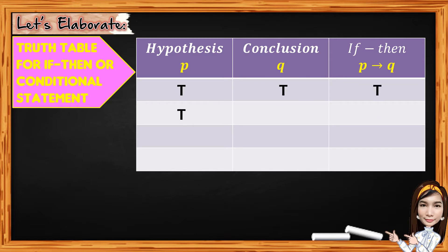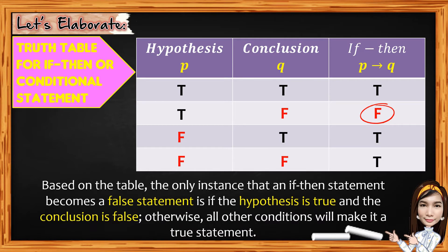If the hypothesis is true and the conclusion is false, the if-then statement is false. If the hypothesis is false and the conclusion is true, the if-then statement is true. And if the hypothesis is false and the conclusion is false, the if-then statement is true. As you observe, the only instance that an if-then statement becomes false is if the hypothesis is true and the conclusion is false. Otherwise, all other conditions will make it a true statement.